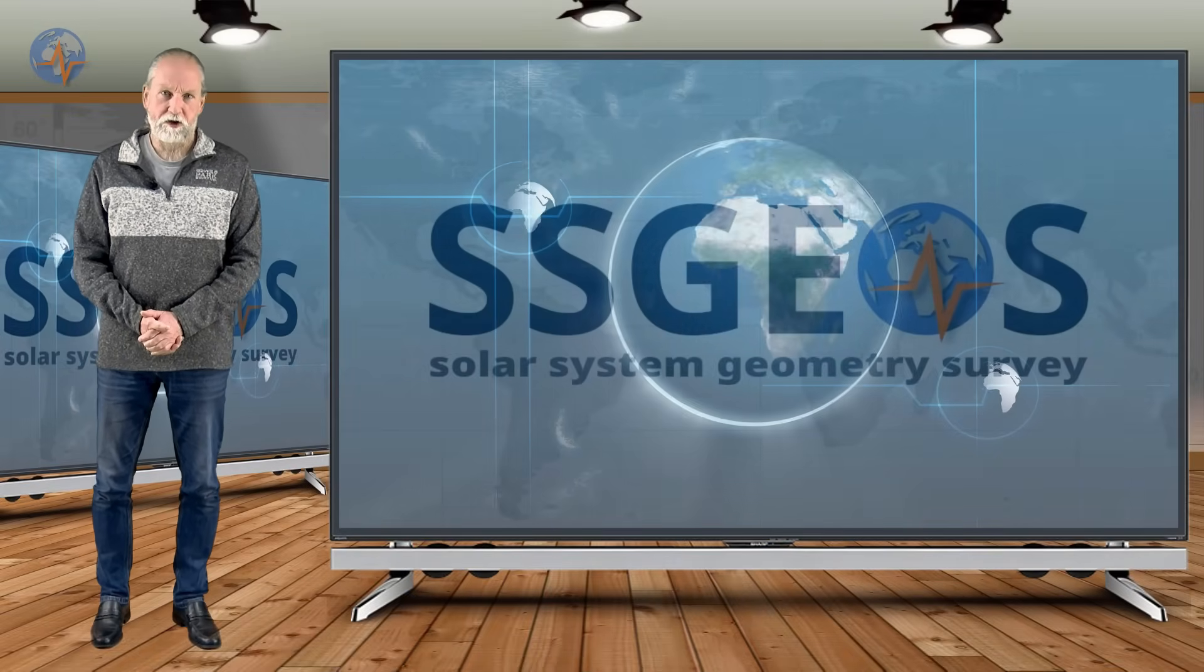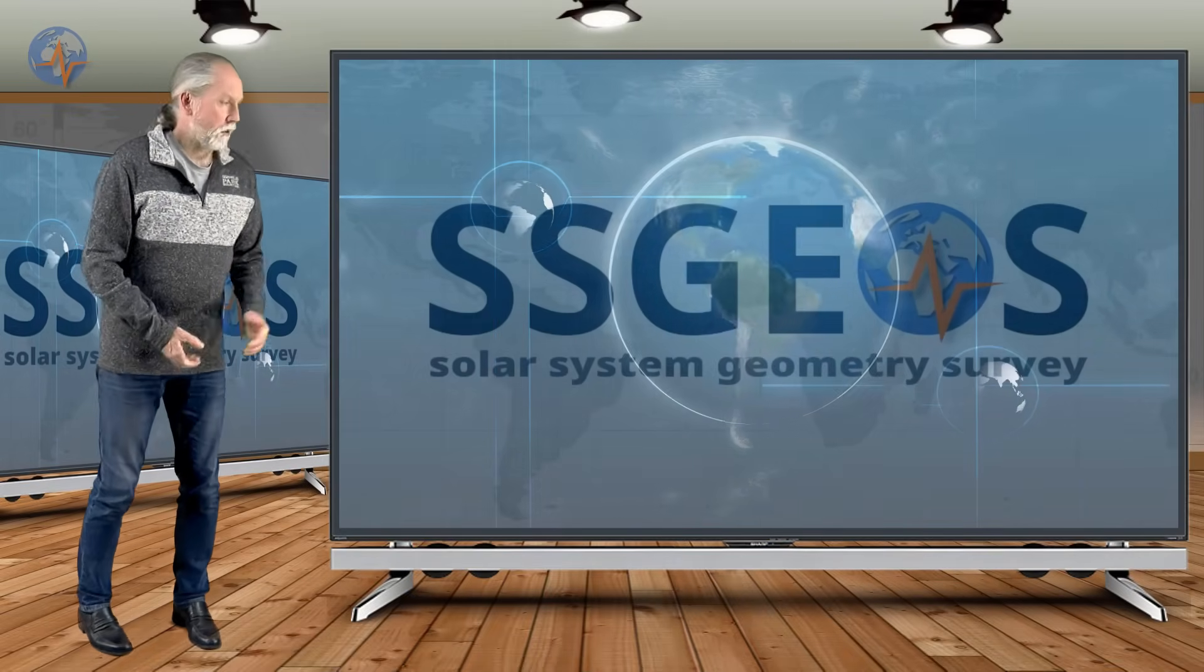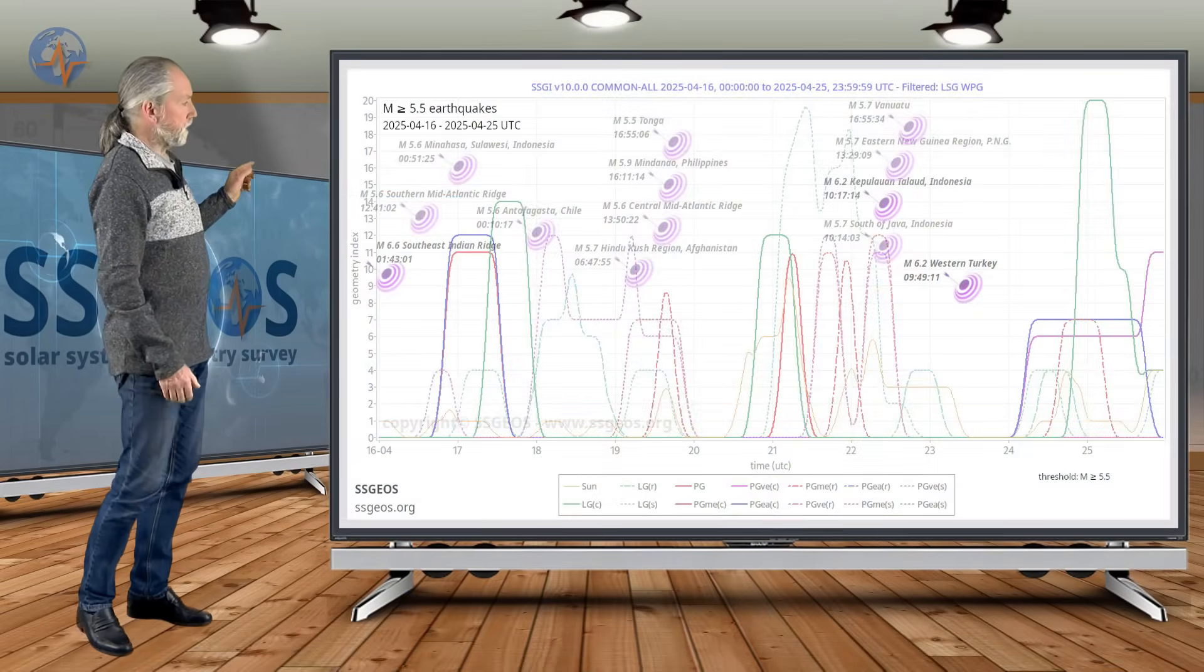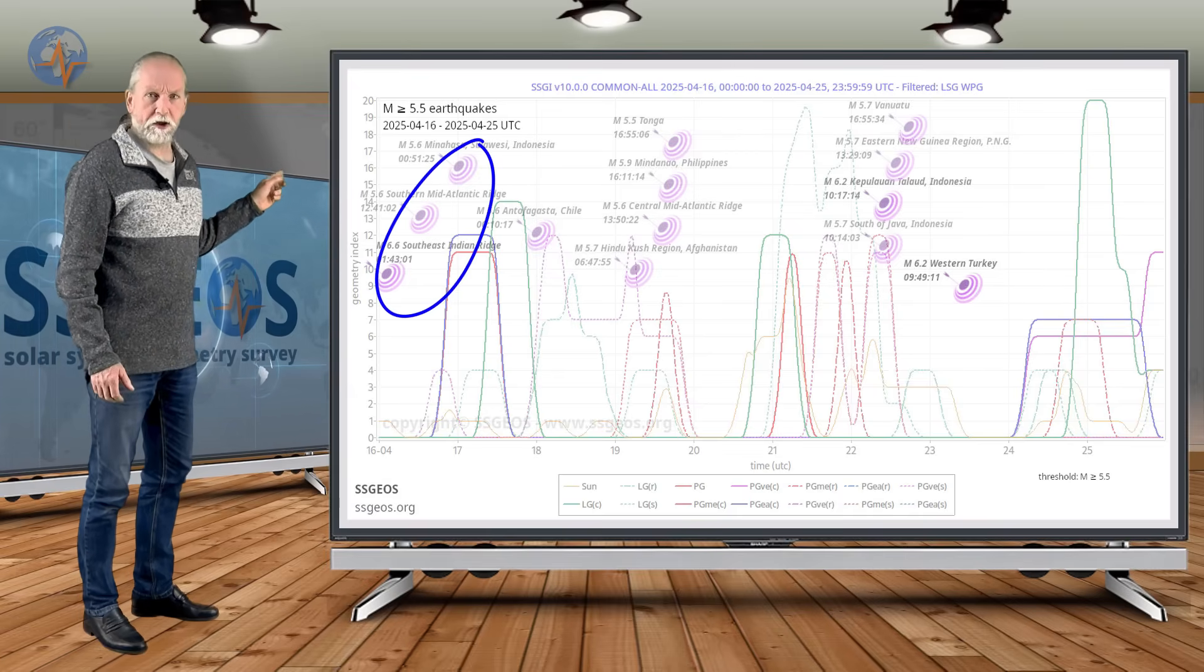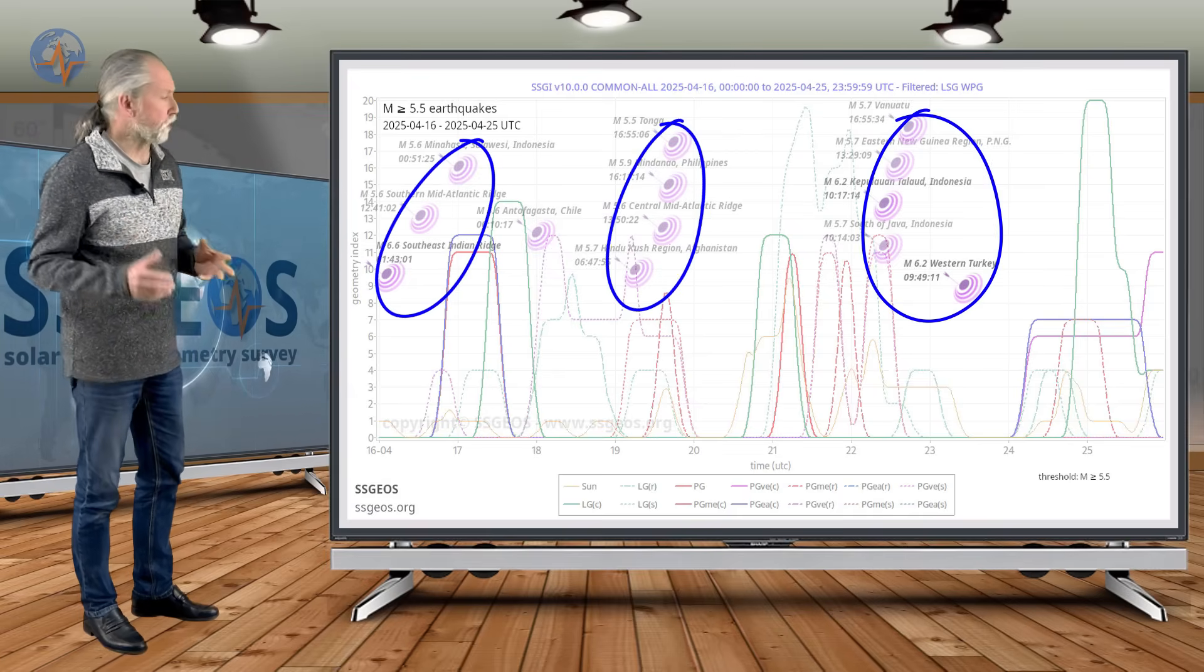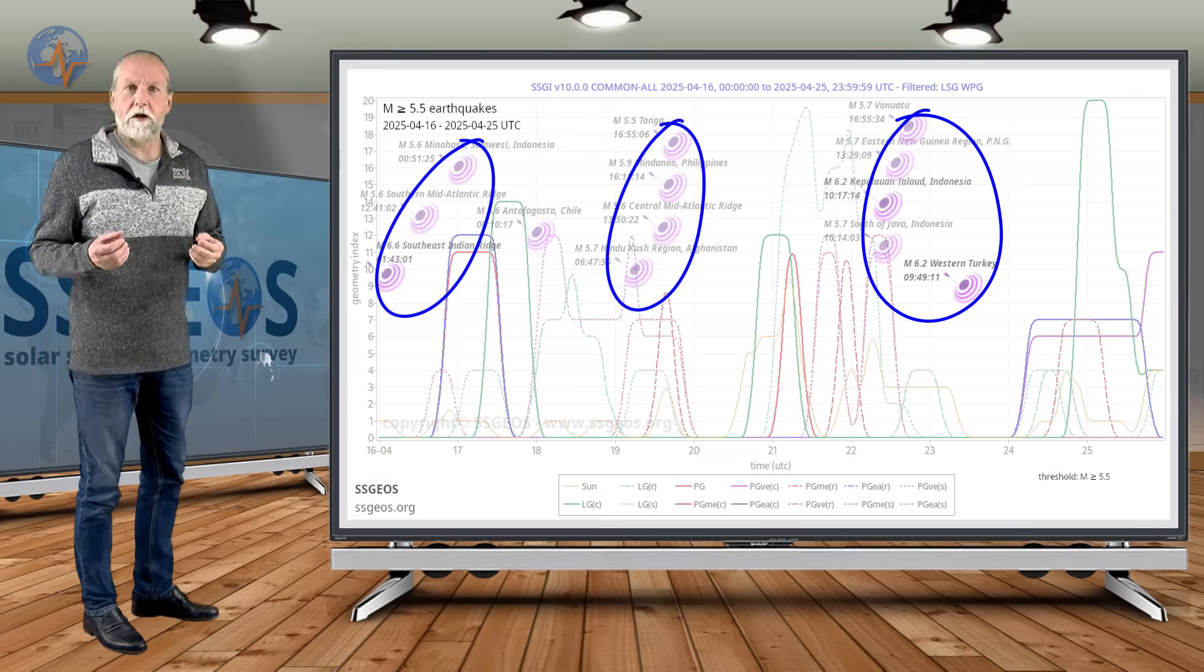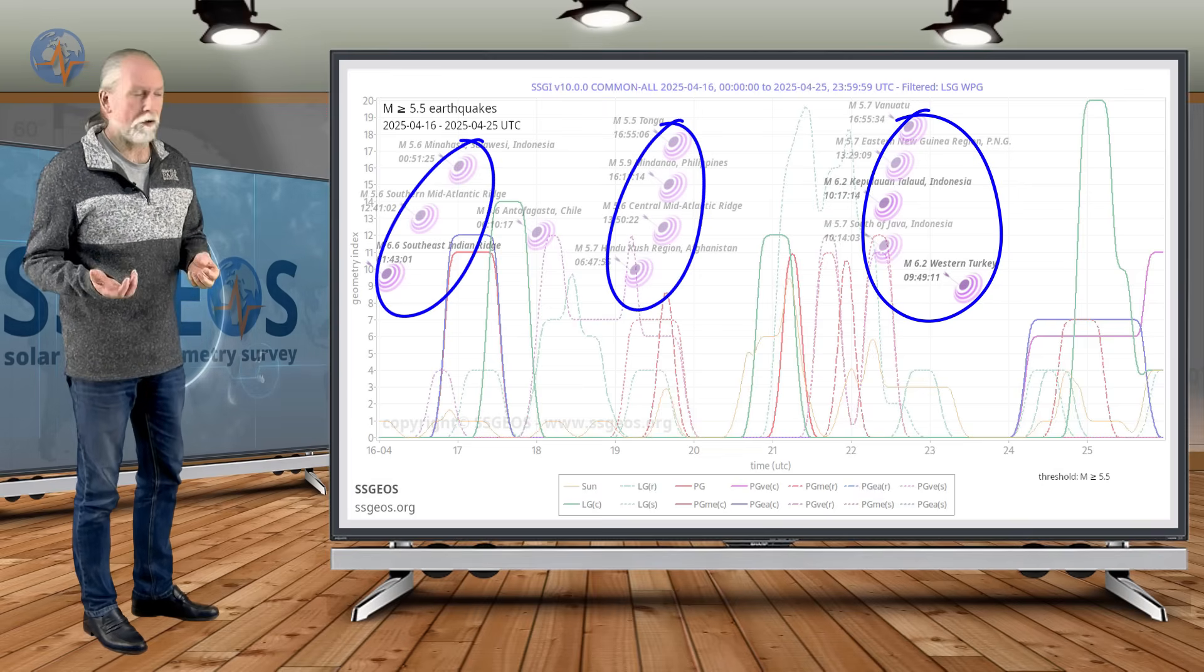Welcome to a new planetary and seismic update. On the SGI graph, we see from the previous time frame very obvious clustering. It's a perfect example of temporal clustering of stronger earthquakes, typically the mid to high five magnitude earthquakes.